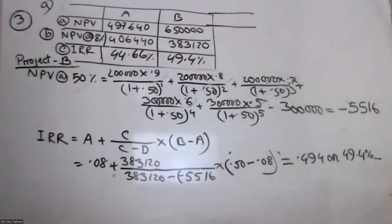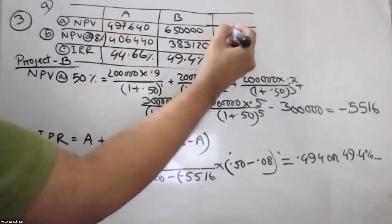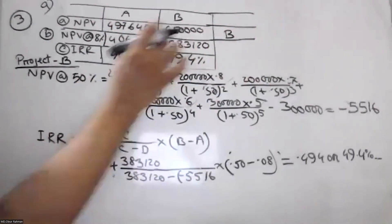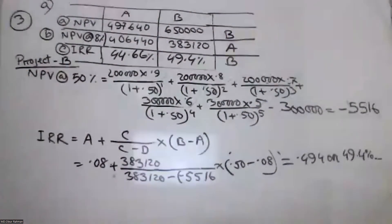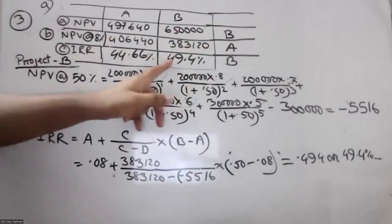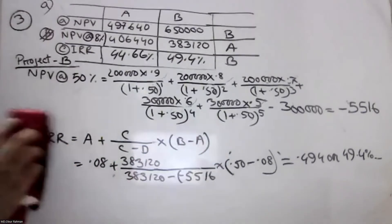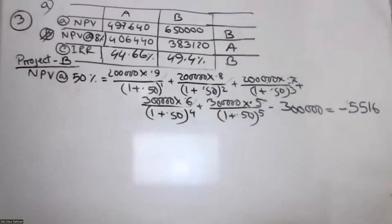We have to make a decision about this — which is B, which is A, which is B. We have to make a decision. If you have to make a decision about this, then you can make a decision, and the company should select Project A because its NPV is higher.